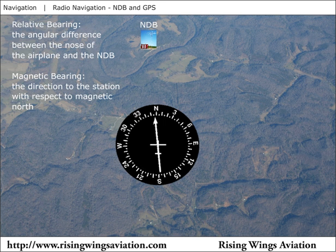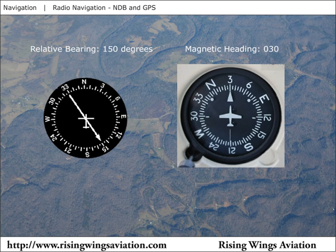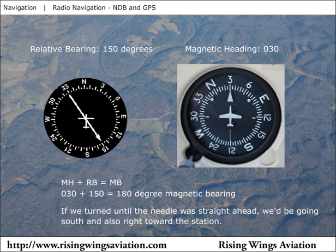The magnetic bearing is much of the time a more usable number since it tells you what the magnetic direction to the station is from the airplane. To find the magnetic bearing, add the airplane's heading to the relative bearing displayed on the ADF needle. For example, if the ADF needle showed a relative bearing of 150 degrees and the airplane was on a 030 heading, then the magnetic bearing to the station is 180 degrees, meaning the NDB is south of the airplane.